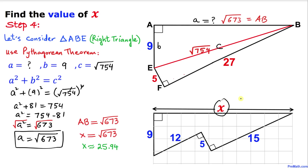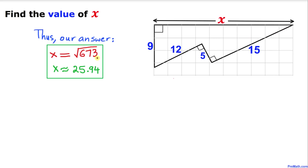So our x value turns out to be √673, or in terms of decimal, approximately equal to 25.94. Here is our final solution: x = √673, or approximately 25.94. Thanks for watching, and please don't forget to subscribe to my channel for more exciting videos.